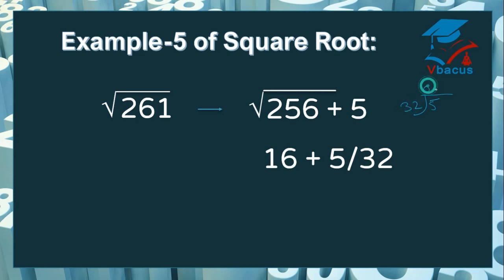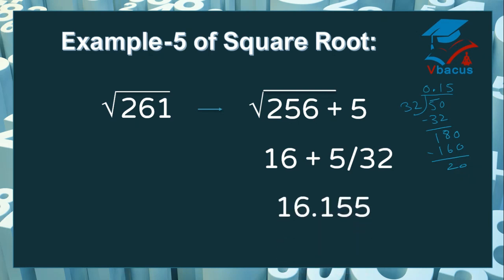You can't divide, so insert decimal. It will go 1 time; minus 32 gives remainder 8. Then it will go approximately 5 times: 5 tens carry 1, 15 plus 16 is around 20. So your answer will become 16.155. That is the square root of 261.